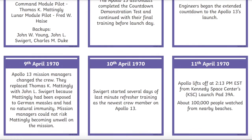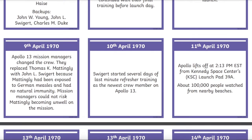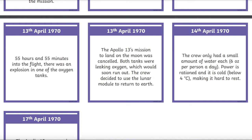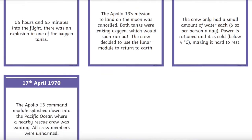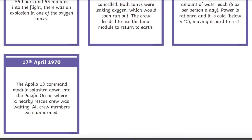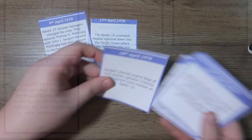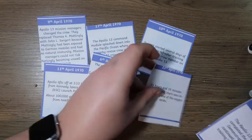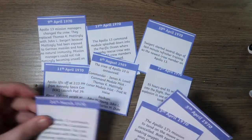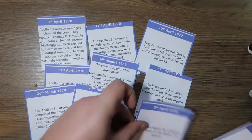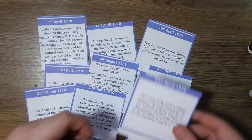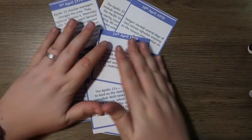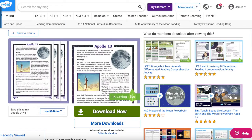Once you've used the PowerPoint, the Apollo 13 timeline ordering activity is a great task for children to complete in pairs or groups. After talking your children through the key events of the Apollo 13 mission, this useful timeline challenges children to order the key events chronologically. Children will be intrigued by the story of Apollo 13 and how the astronauts were saved — a perfect addition to any space lesson.